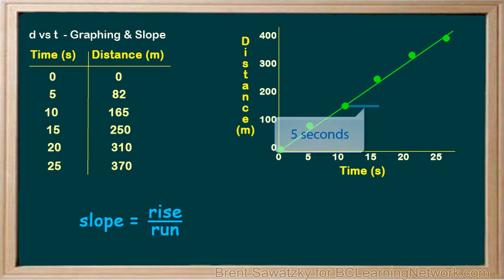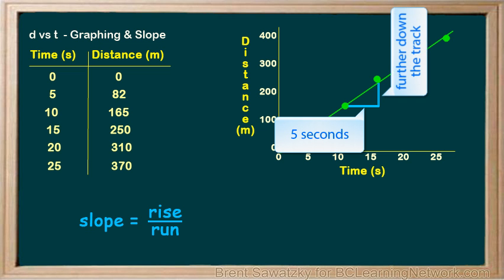We can see that over this five seconds, the person gets further down the track. The further they got in those five seconds, the faster they'd be going. So, if they were going really fast, they would get even further in the next five seconds and the slope would be steeper. Therefore, we could suggest that the slope might represent the speed of the runner.